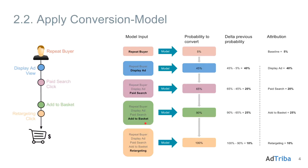The final step is a retargeting banner click, because for example the retargeting pixel has been fired on the add to basket event. The model calculates on the basis of all available information a conversion probability of 100%, which is 10 percentage points higher than the previous 90%, and that will be attributed to retargeting. This illustrates how important it is to include on-site events — if we had left out the add to basket event, the increase from 65% to 100% would have been wrongly attributed to retargeting, so retargeting would have been overvalued.